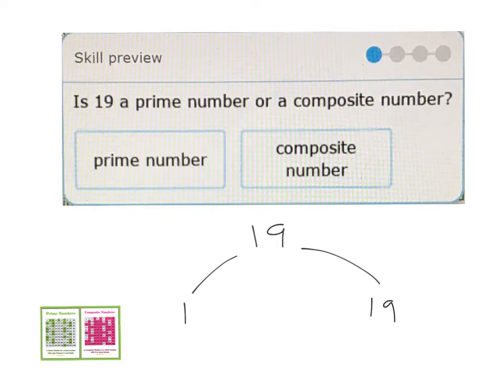So can I take groups of two? Can I do two times anything? No. Can I do three times anything? No. Four times? No. Five times? No. Six times? No. Seven times? No. Eight times? No. Nine times? No. Ten times? No. And then now 11 is going to not even fit in there more than twice.